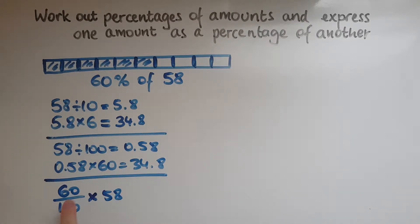So 60 divided by 100 times 58. And that, again, gives us 34.8. So that's another way.